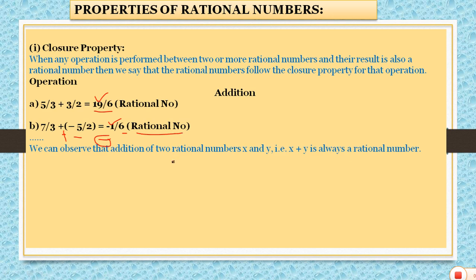So if two rational numbers are added and the result is a rational number, then we can say that rational numbers follow closure property under addition. That means x plus y is always a rational number.